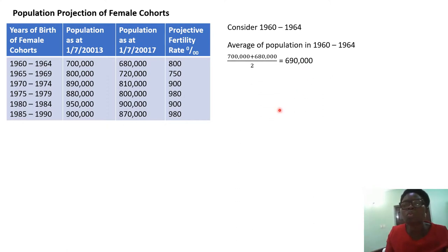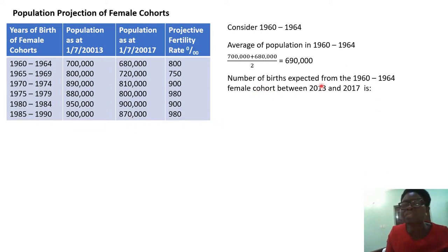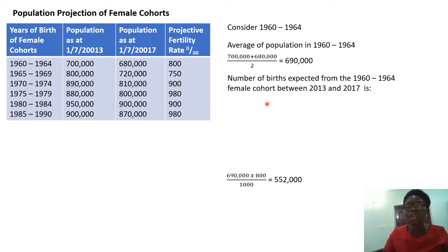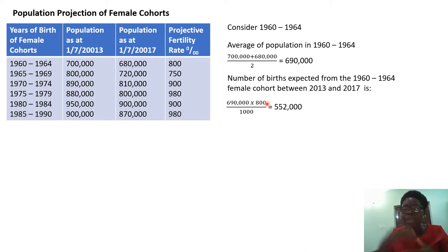The average population for this cohort is calculated as follows: in 2013 they were 700,000 and in 2017 they were 680,000. Divide by two and you get 690,000 — this is the average for those born between 1960 and 1964. To find the total number of births expected from this female cohort between 2013 and 2016, we multiply the average by the fertility rate and divide by 1,000, as is standard in demography.